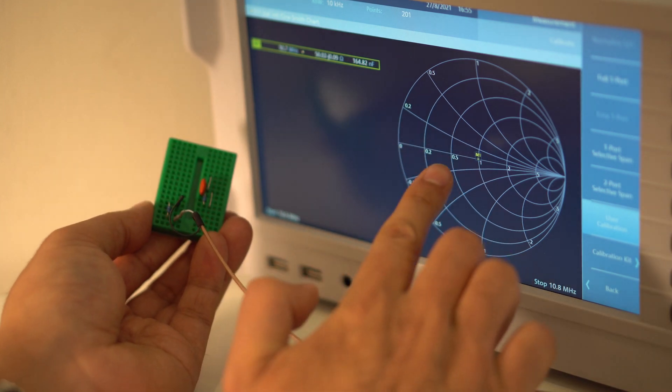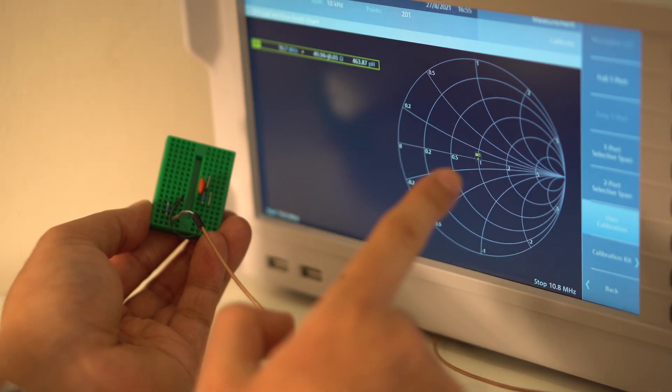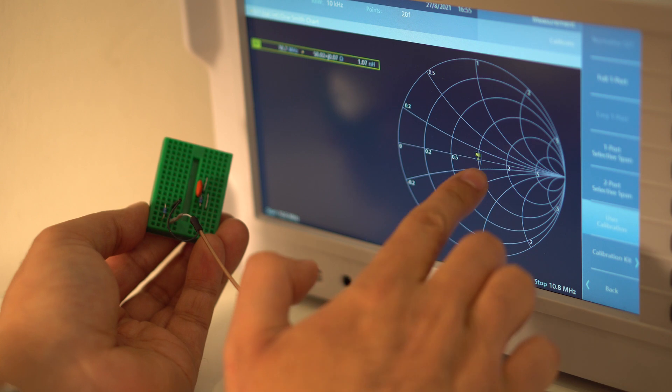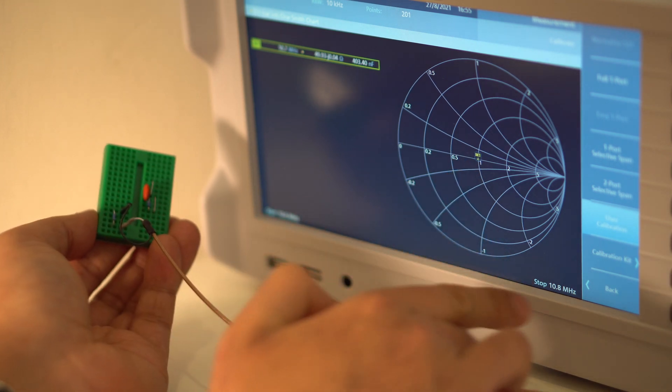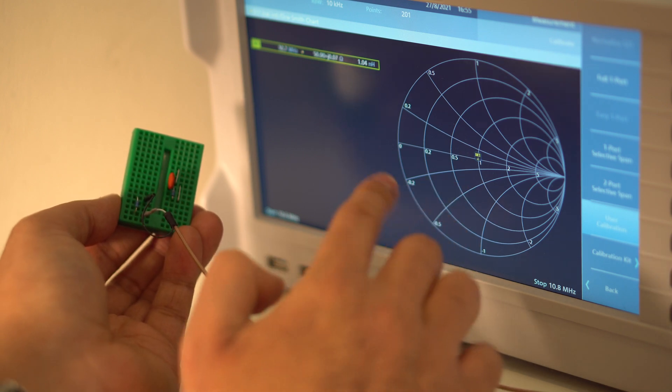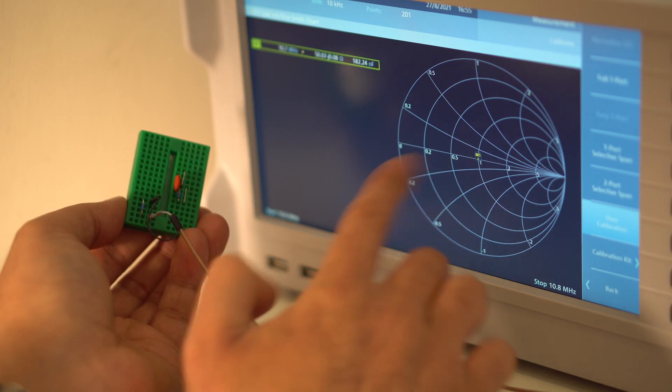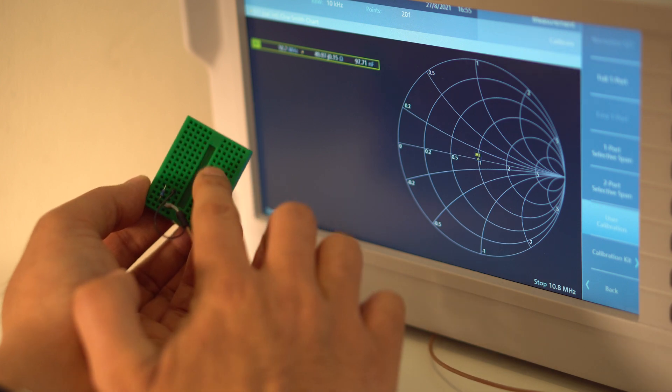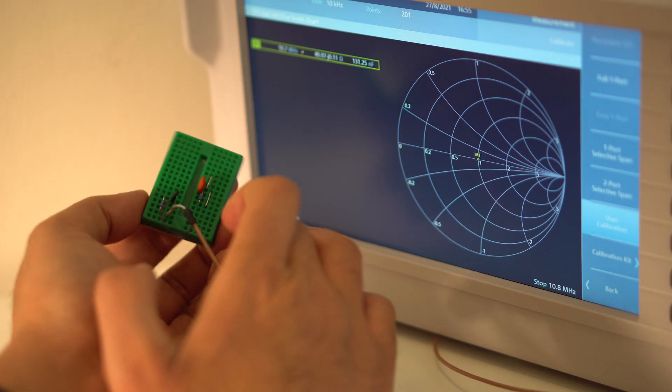And now there's a spot right at the center there, that's at M1, the M1 marker is set to 10.7 MHz and the start and stop is set to 10.6 and 10.8 MHz, so basically 100 kHz either side of 10.7 MHz which is the center frequency of this filter.